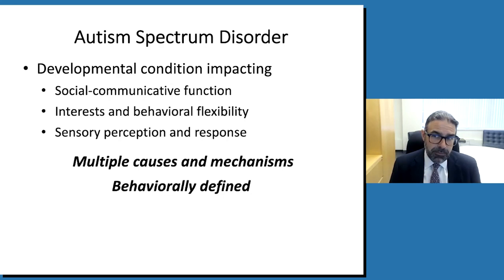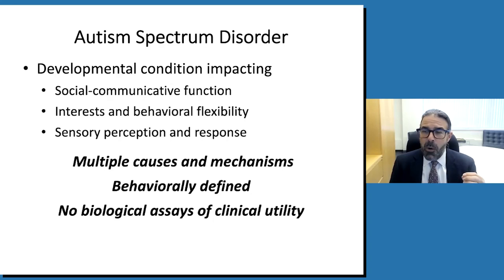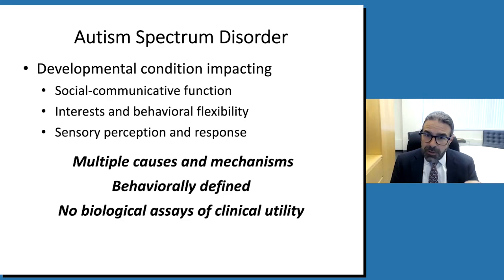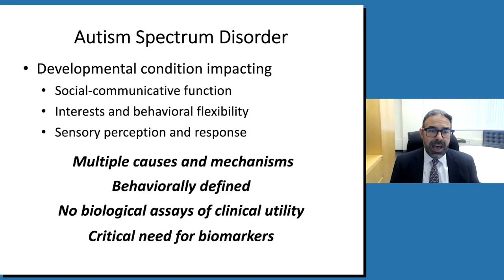To say it strongly: there is not one biological assay that we can use in autism that really has clinical utility. I think we could do an even better job if we had more biological understanding of autism and more biological tools to inform clinical practice and clinical research. That is where biomarkers come in — that's why I see biomarkers as such a critical need for our field.